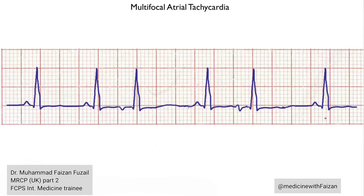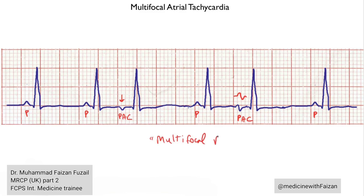Imagine you're looking at a rhythm strip like this. These look like normal sinus beats with p-waves and QRS complexes. This is clearly an early beat — a premature atrial contraction — followed by a compensatory pause, another sinus beat, and then another PAC. But the p-wave looks different: this one is a biphasic p-wave that goes up and then down, while this one only goes down. So what you have here is sinus rhythm with multifocal PACs, which is different from multifocal atrial tachycardia.